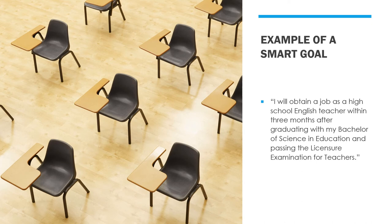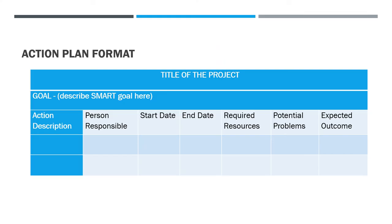As you can see, it is specific, measurable, attainable, relevant, and time-bound. This is the format of an action plan. It contains the title of the subject, the goal described as the SMART goal, the action description, the person responsible, the start and end date, required resources, potential problems, and expected outcome. You can add as many rows as there are actions to achieve your goals.